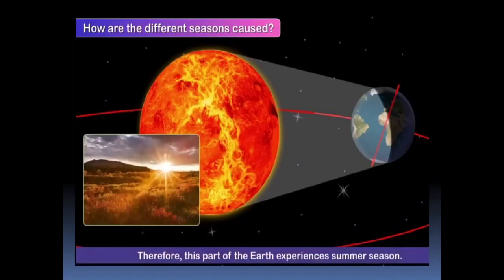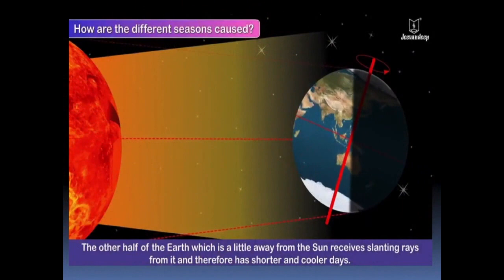The other half of the earth which is a little away from the sun receives slanting rays from it and therefore has shorter and cooler days. It is winter in this part of the earth.